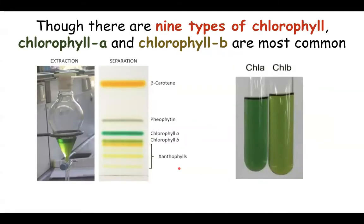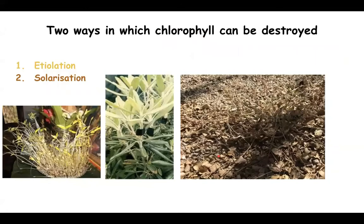Though there are nine types of chlorophyll in a plant, chlorophyll A and chlorophyll B are the most important. They vary a little bit in their color, but these are the structures which have maximum absorption of sunlight. Chlorophyll is one pigment which can be synthesized only when a plant is exposed to sunlight. When a plant is not exposed to sunlight, the chlorophyll will not be synthesized; or if it is exposed to too much sunlight or too much intense heat, then the chlorophyll will be destroyed.